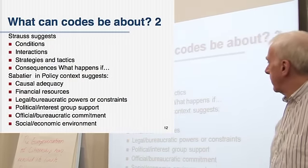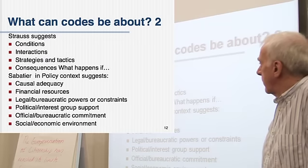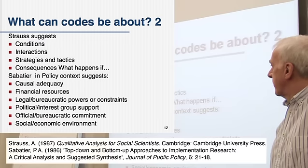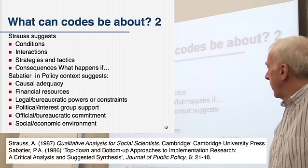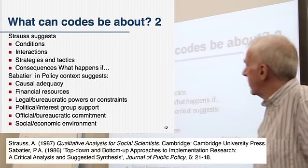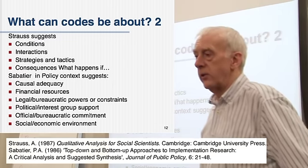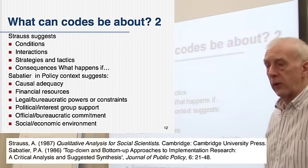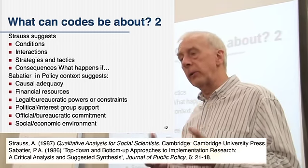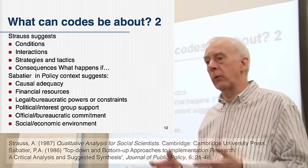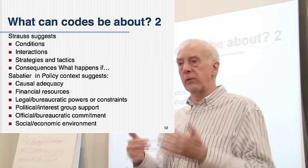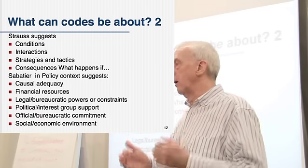There are also others, though I'm not going to go through all these in great detail. Strauss of the grounded theory approach suggests looking for conditions, interactions, strategies and tactics, and consequences. What happens if so-and-so happens? What interactions are going on between the elements in this setting? What strategies and tactics are people adopting to do what they want to do? And what are the consequences of someone doing, saying, et cetera, this?